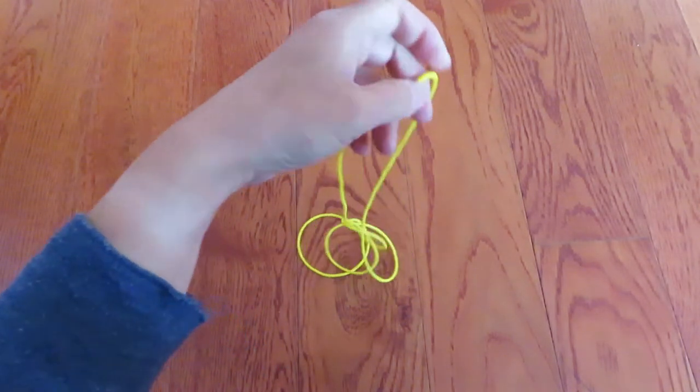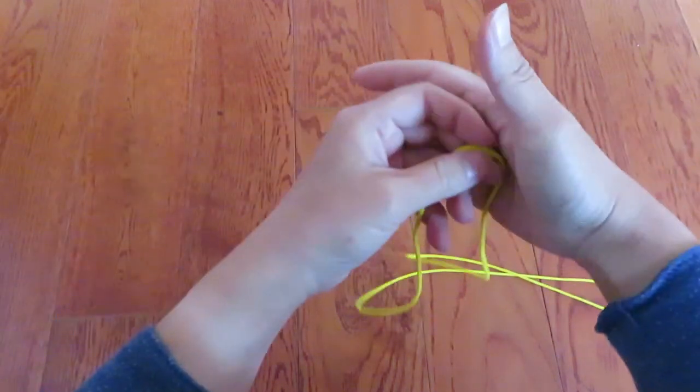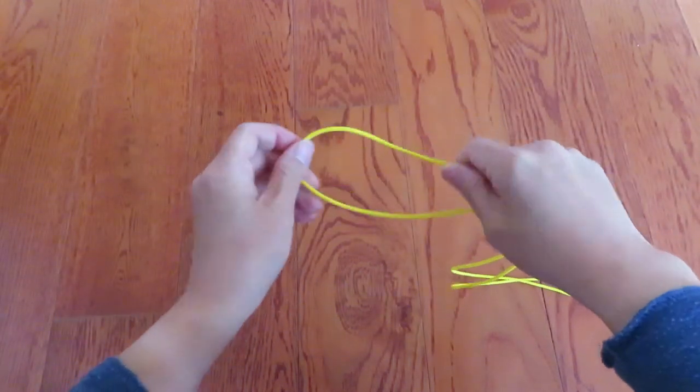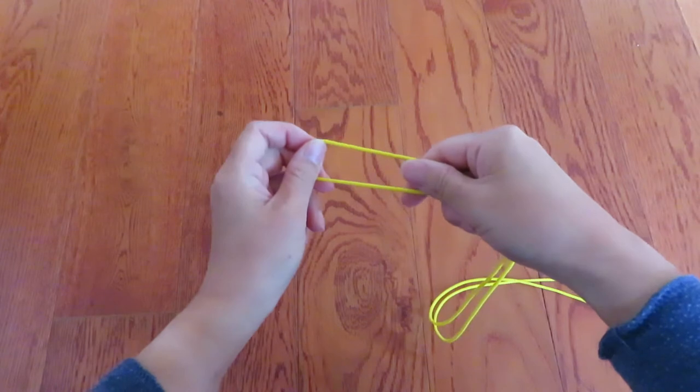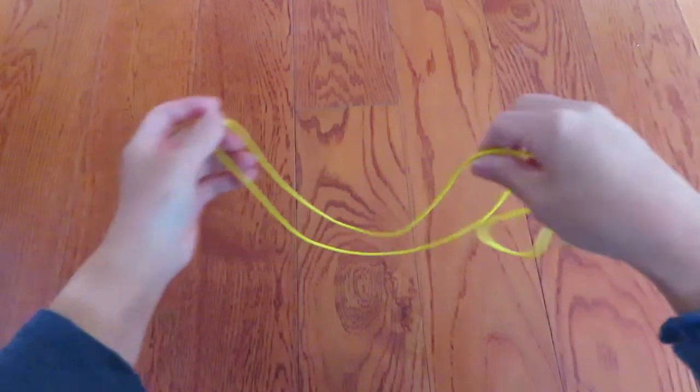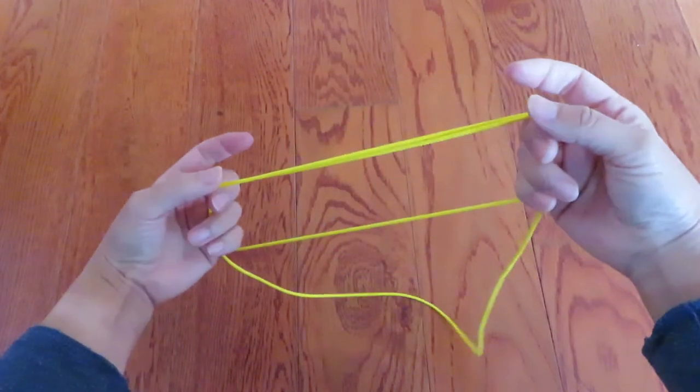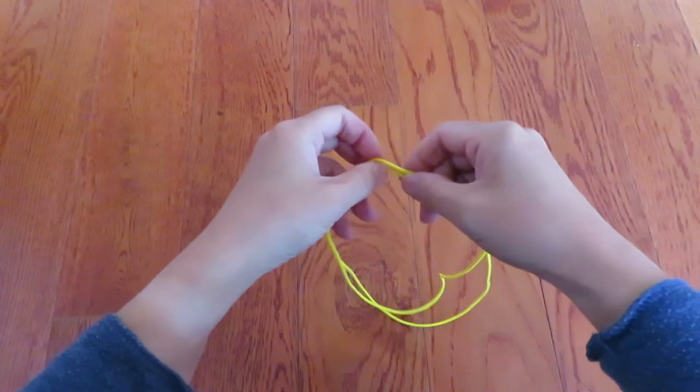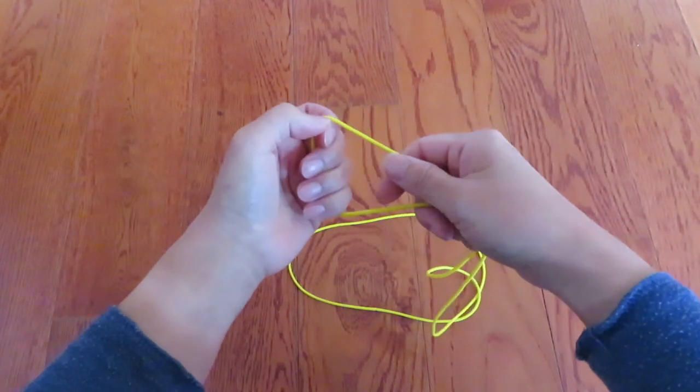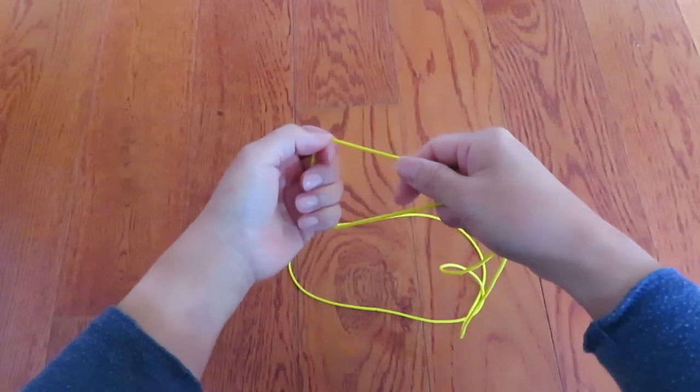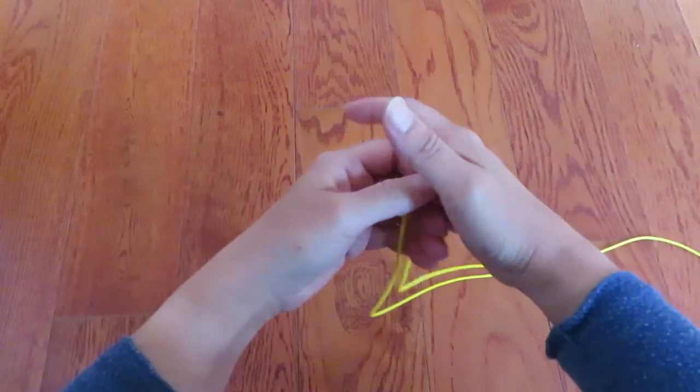You need a Cat's Cradle String Loop like this for Cat's Cradle. And if you don't have one, please make one yourself. The tutorial video for the Cat's Cradle String Loop is in the description box below. Let's get started.